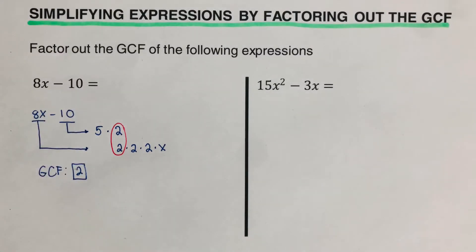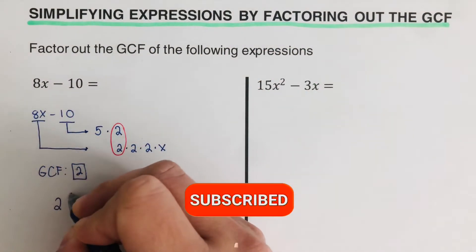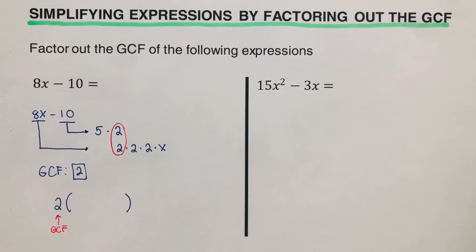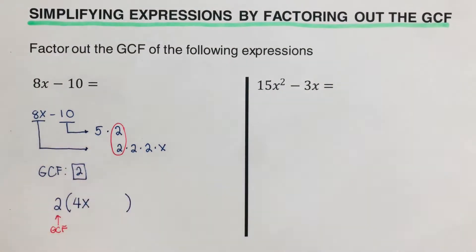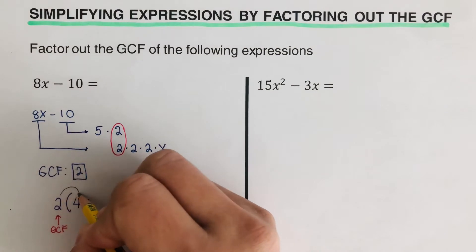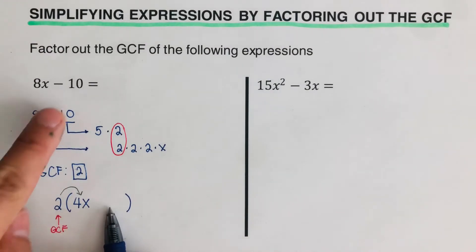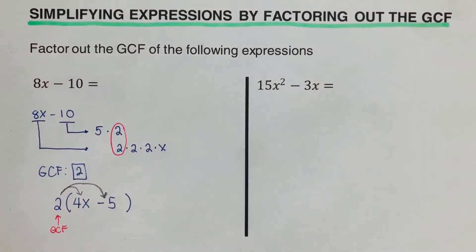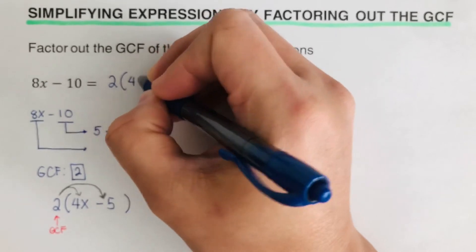Now we move on to the third step: use the distributive property backwards to simplify the expression. We write the GCF, which is 2, outside the parentheses. We need to figure out what to write inside such that 2 times that expression gives 8x — that would be 4x. Then we figure out what times 2 gives negative 10 — that would be negative 5. So we apply the distributive property backwards to get 2 times (4x minus 5).